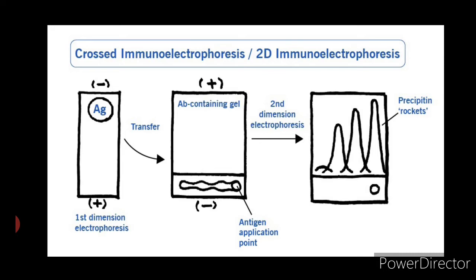If you all can see in the figure, an antigen is first electrophoresed by first dimension electrophoresis and transferred in an antibody containing gel where second dimensional electrophoresis is carried out.